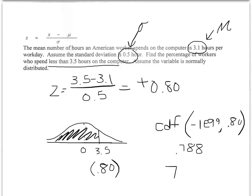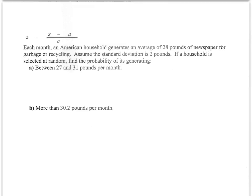Let's look at another example. In this situation we're looking at the average household newspaper recycling, talking garbage. If you take the 27 and the 31 and find the z-scores, we have a mu and a standard deviation. I'm going to have to find both of those numbers.